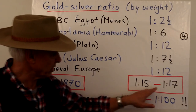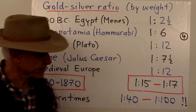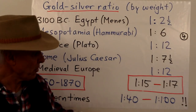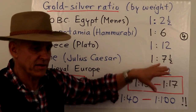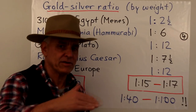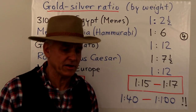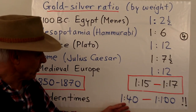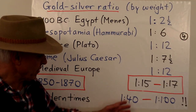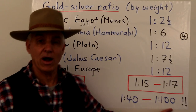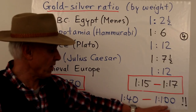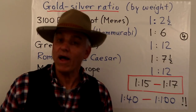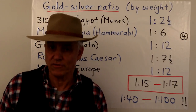After that period it gradually drifted upwards to one to seventeen. In modern times things have changed dramatically. Although there was a relatively slow and stable shift in this ratio over historical time, in the last 50 years or so the ratio has gone from one to forty to pretty well one to a hundred. By historical standards, gold is much overvalued currently, and silver is very much undervalued.